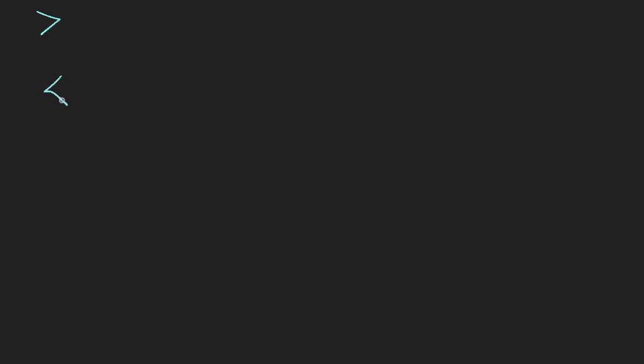Let's start off by remembering what we know about inequalities. These are the symbols. This is the greater than symbol and this is the smaller than symbol. So for example, you can write 3 is greater than 2 or 1 is less than 7.